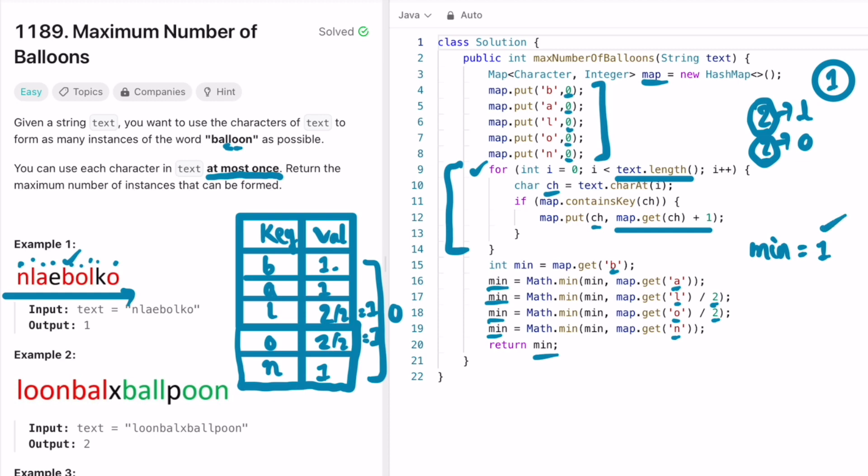The time complexity of this approach is O(n) because I'm using a for loop to fill the map, where n is the length of the input string text. And the space complexity is also O(1) because I'm using constant space inside the map.